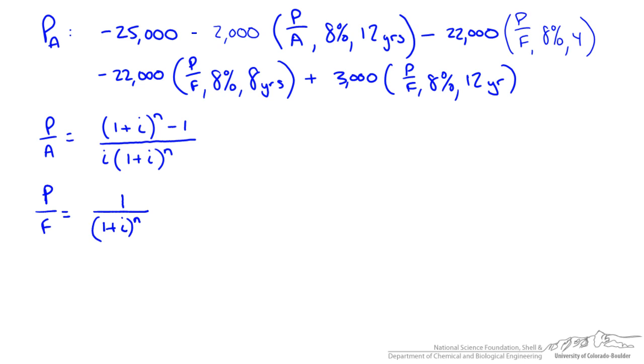So I've written out the equations that we can use for these factors, where i is the periodic interest rate, and n is the number of periods. So this is assuming that our interest is compounded yearly. So we can rewrite our equation above using these equations, and it should look like the following.